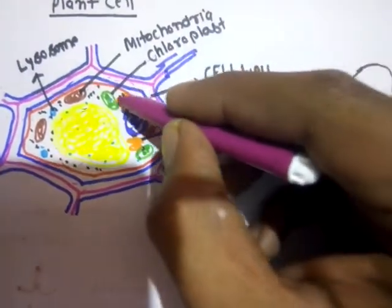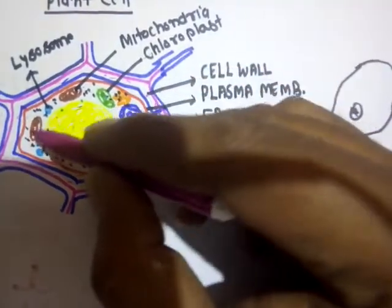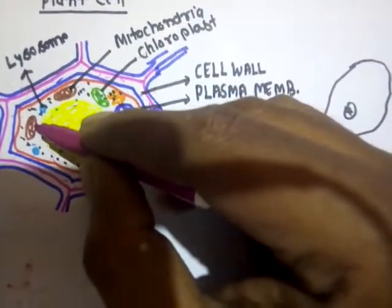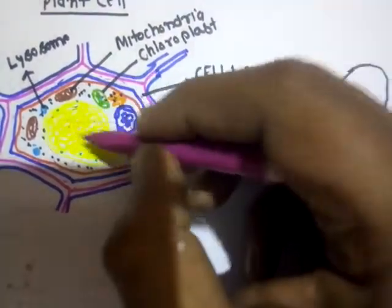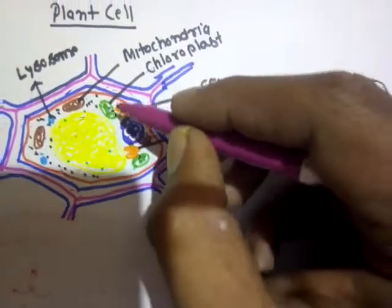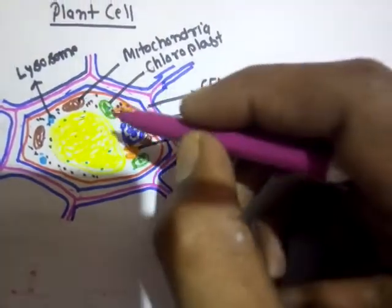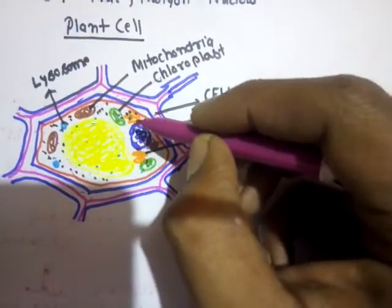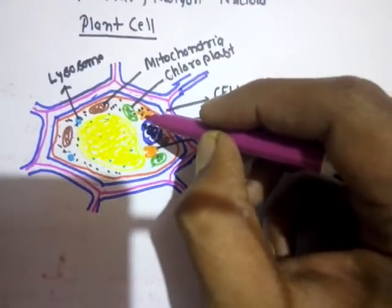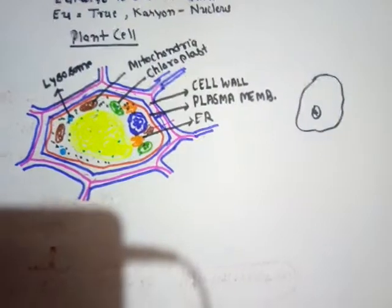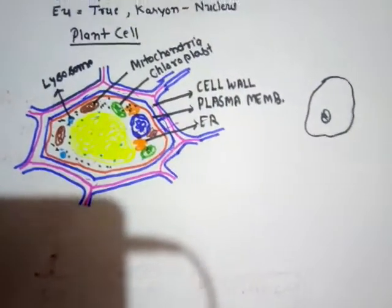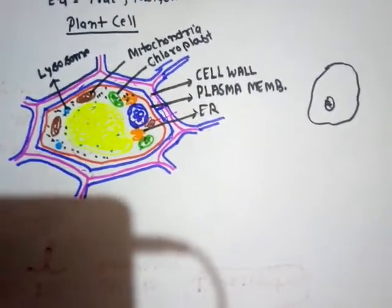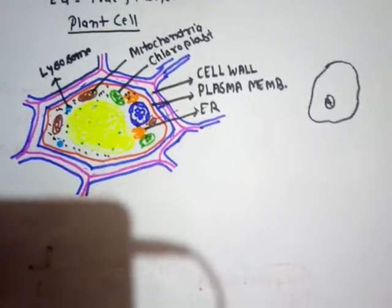In eukaryotic cells, some ribosomes are also found inside the chloroplast and mitochondria, but these are different from cytoplasmic ribosomes. The ribosomes inside chloroplasts and mitochondria are of the 70S type, while ribosomes in the cytoplasm and on the endoplasmic reticulum are of the 80S type. These are the important features of the plant cell. We will discuss the structure of the animal cell in the next video. Thank you very much for watching.